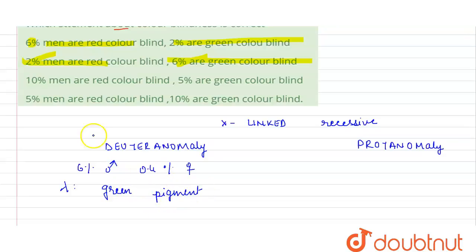Whereas in protanomaly, what happens? Two percent males and 0.01 percent females have a mutation in the long wavelength of the red pigment, and hence they are red color blind.